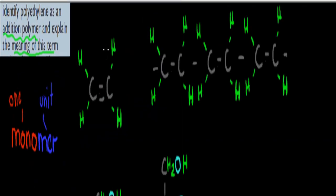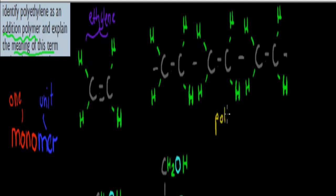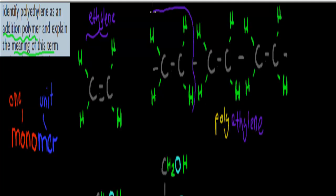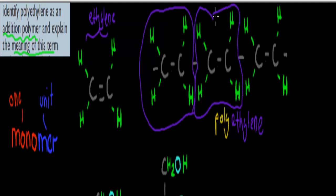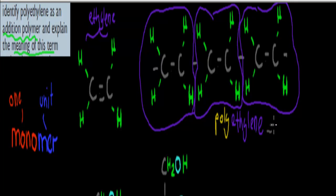Ethylene is a monomer — this here is ethylene. It's one unit long, so even though there are two carbons attached, this is just one unit together. Whereas if we attach them together we call it polyethylene. You can imagine each of these is an ethylene monomer, and what we've done is literally attached them to each other and made a polymer. This example is three monomers long, but some polyethylene can be hundreds of thousands of monomers long.